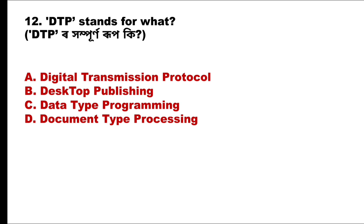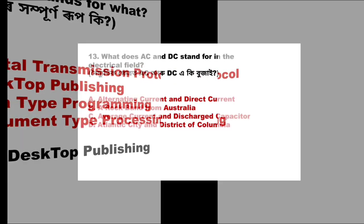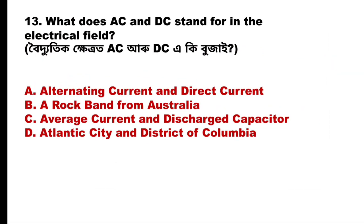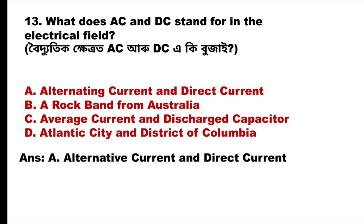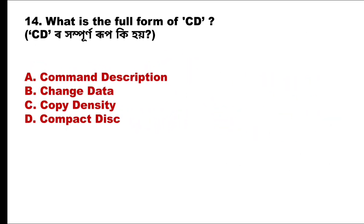Question: What does AC and DC mean? AC stands for Alternating Current and DC stands for Direct Current.